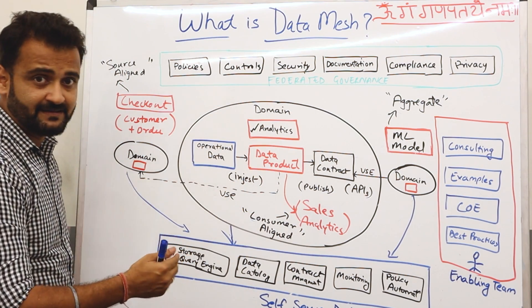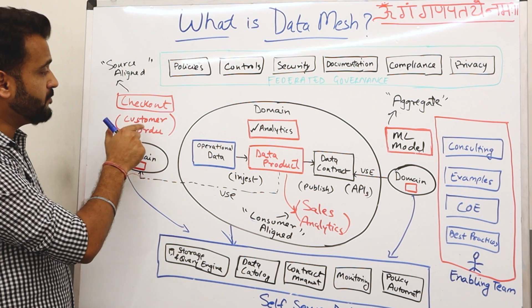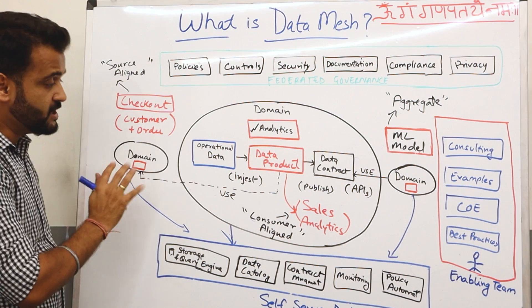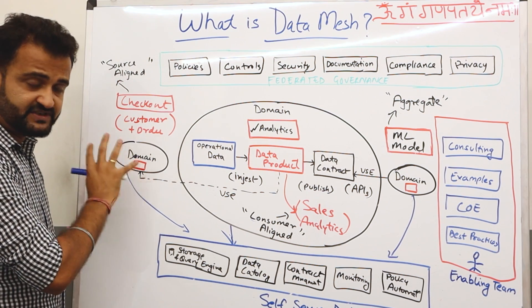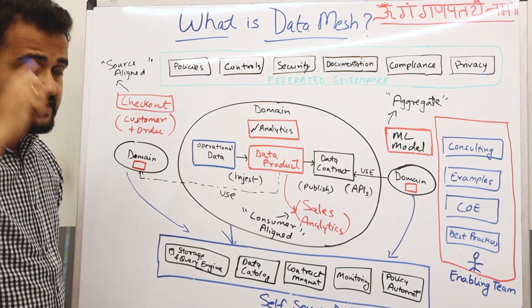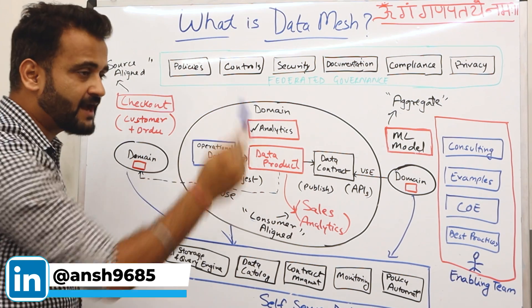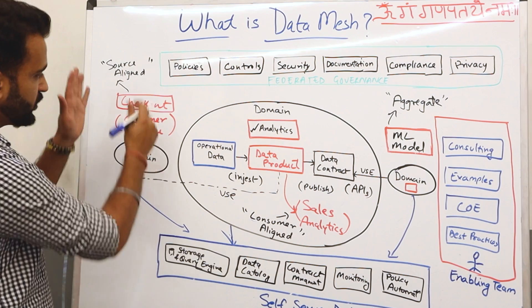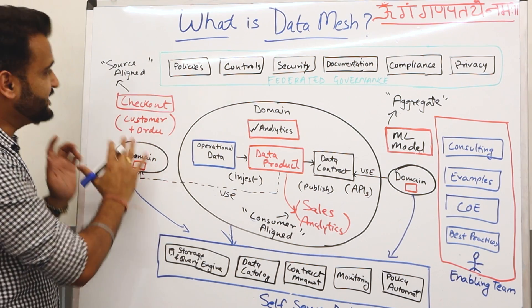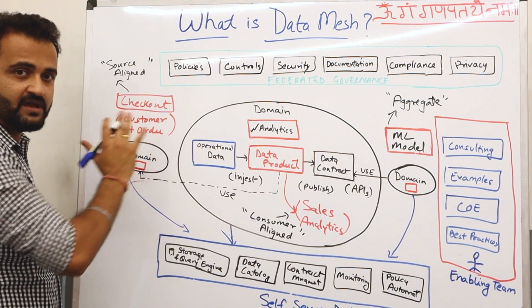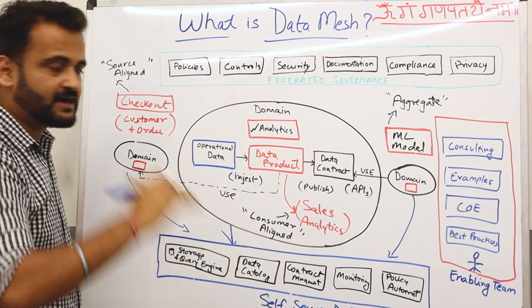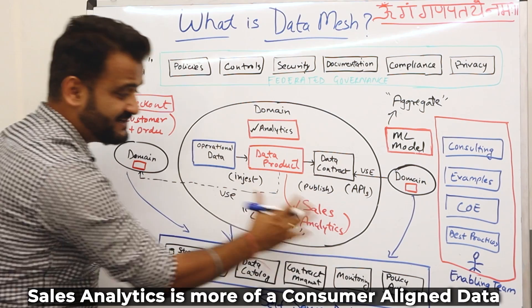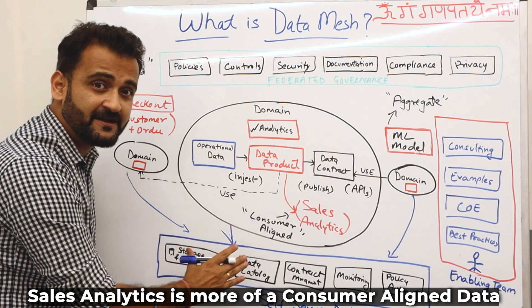So this sales analytics data product wants to get the data from checkout domain for customer plus order data. So this particular data which is in this particular domain, we can see it from a different perspective also. This architecture can also be seen from a data classification standpoint. So whatever you see on the checkout side is more of a source-aligned data. So we can say that in a company we will have source-aligned data which sits closer to the source.